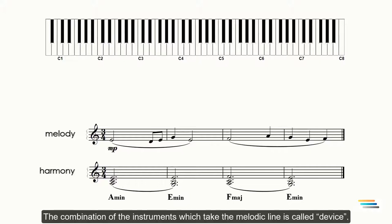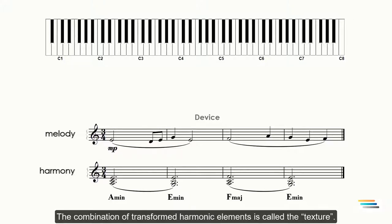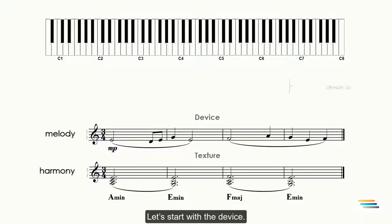The combination of the instruments which take the melodic line is called device. The combination of transformed harmonic elements is called the texture. Let's start with the device.